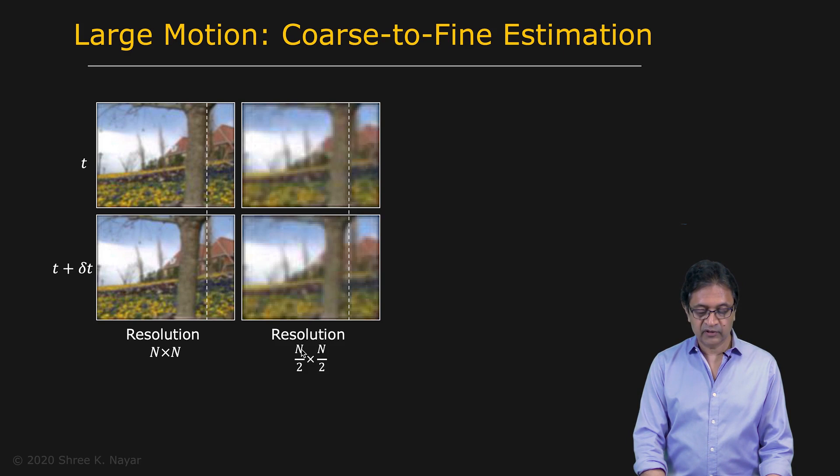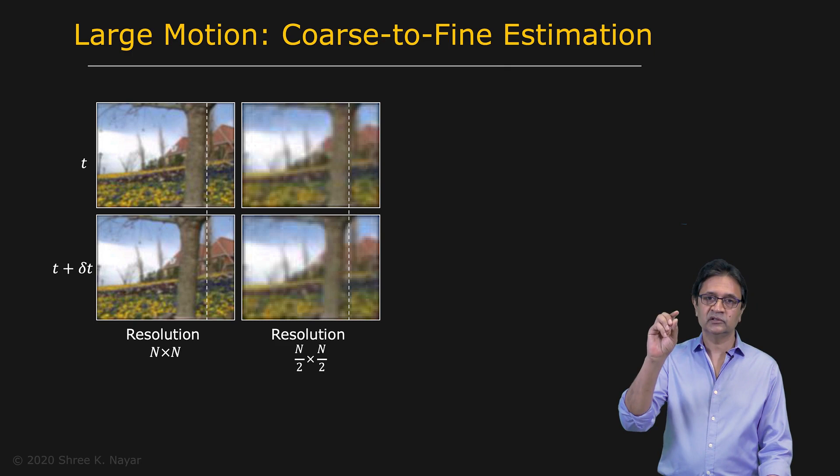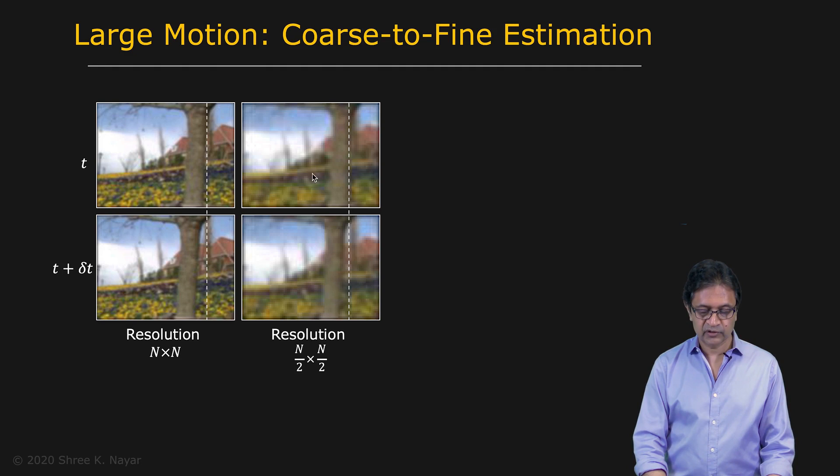What we are going to do is to compute lower resolution versions of these two images. We can compute images that are of resolution n by 2 times n by 2. Simple way to do this is that you take each two by two window in one of these images and then find the average of those values and use that value in this new low resolution image. So that's easy enough to do.